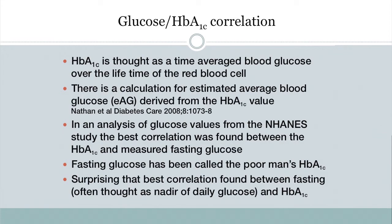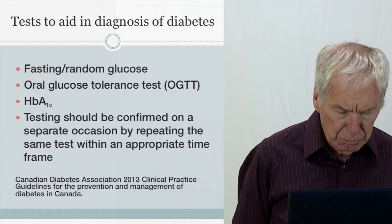There is a calculator for estimating average blood glucose from hemoglobin A1c. When we applied that calculation to data from the NHANES study in the United States, we found that the best correlation between glucose and A1c was with fasting glucose — which is surprising, since we think of fasting glucose as the low point in daytime glucose concentration rather than an average.